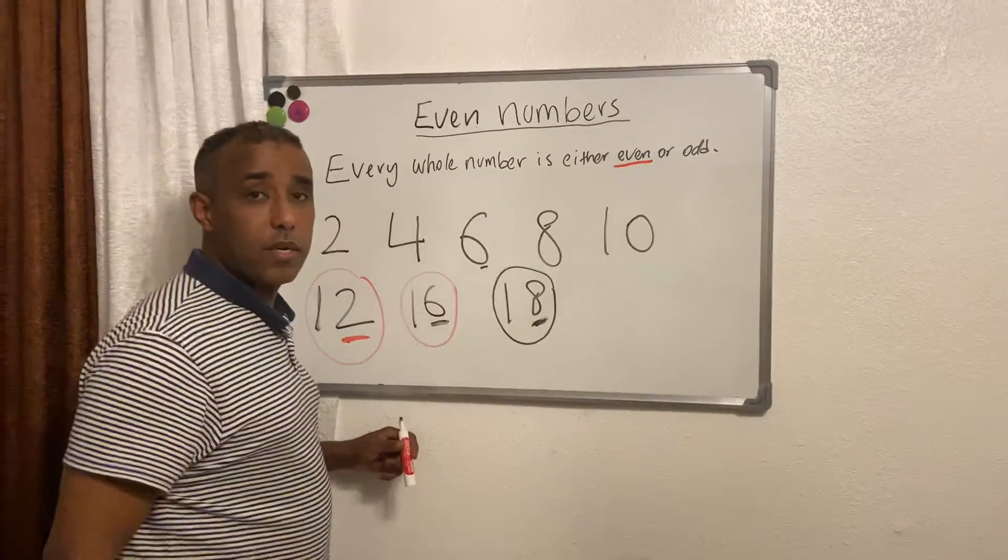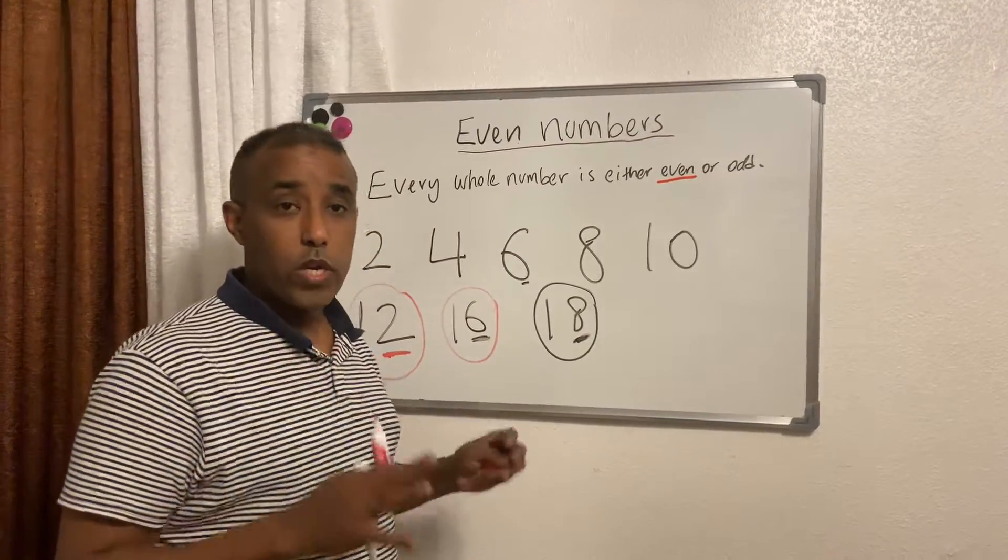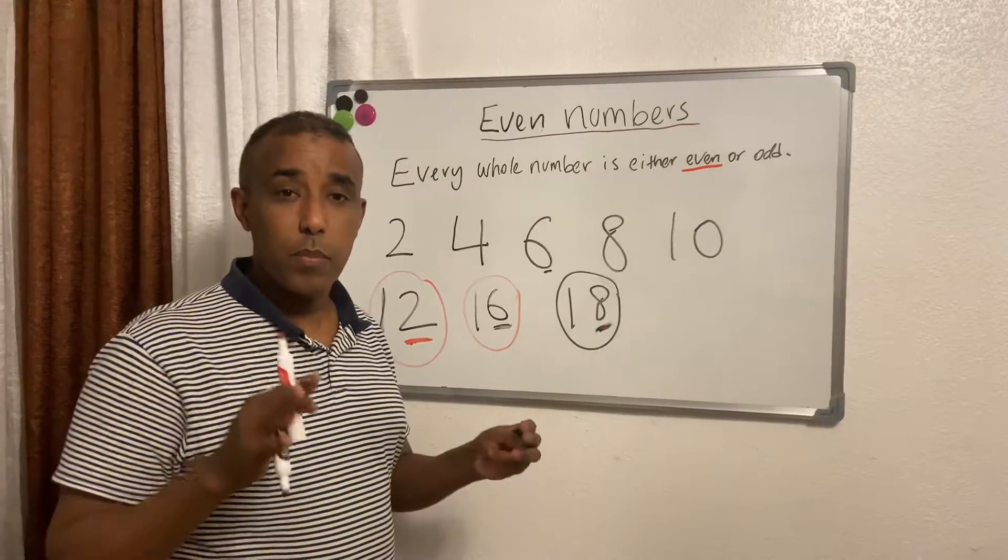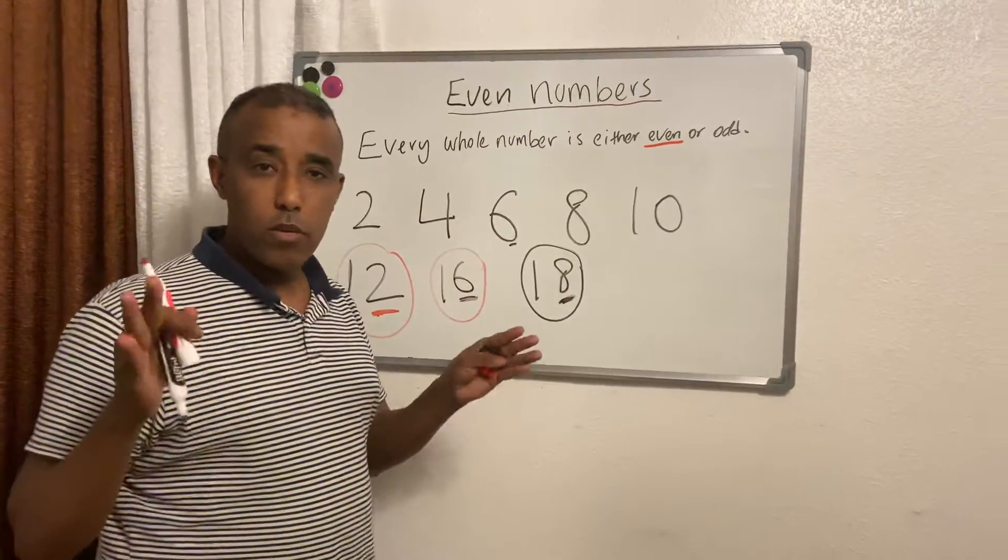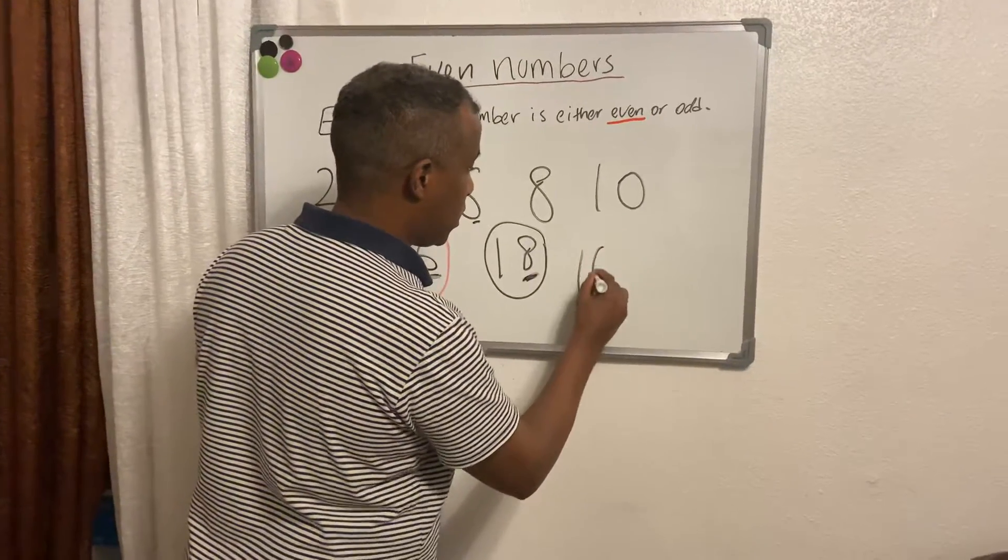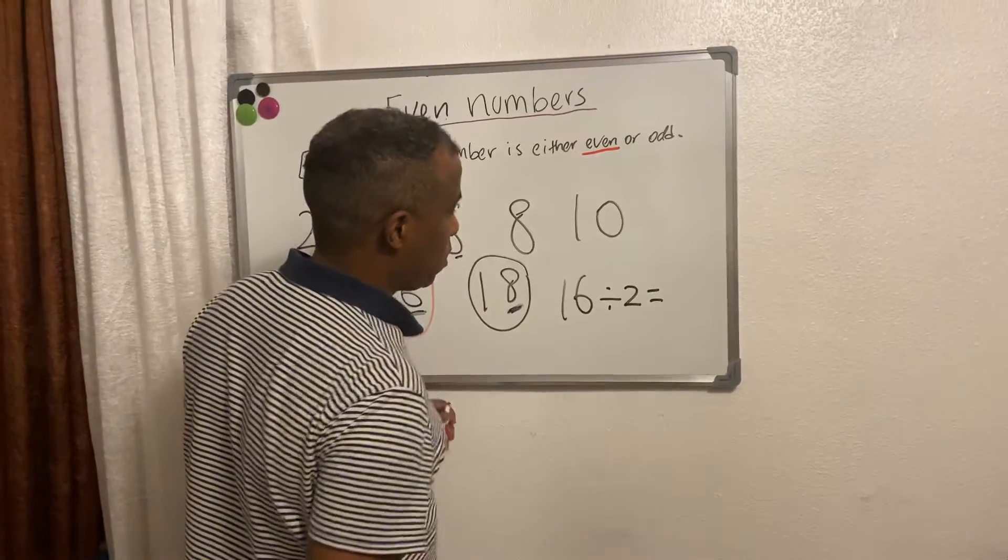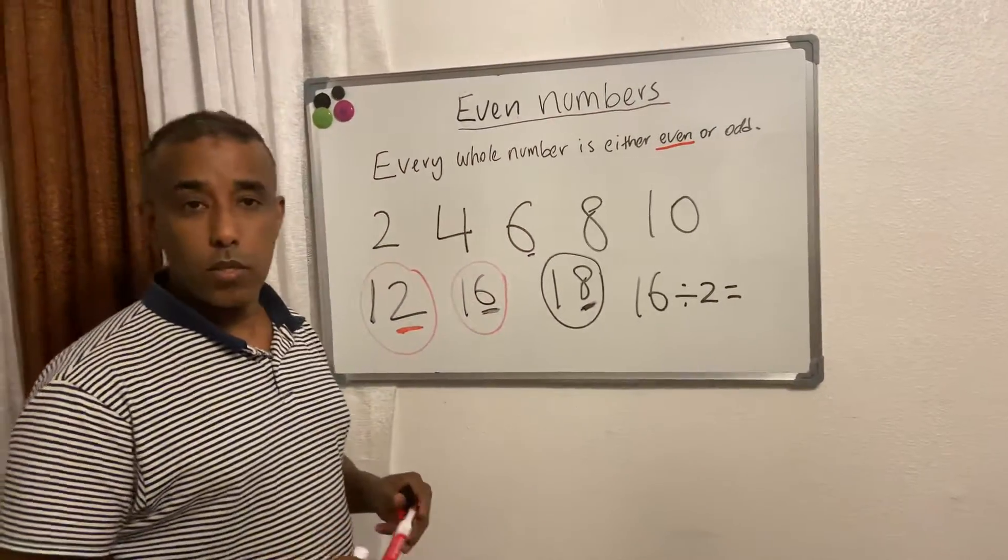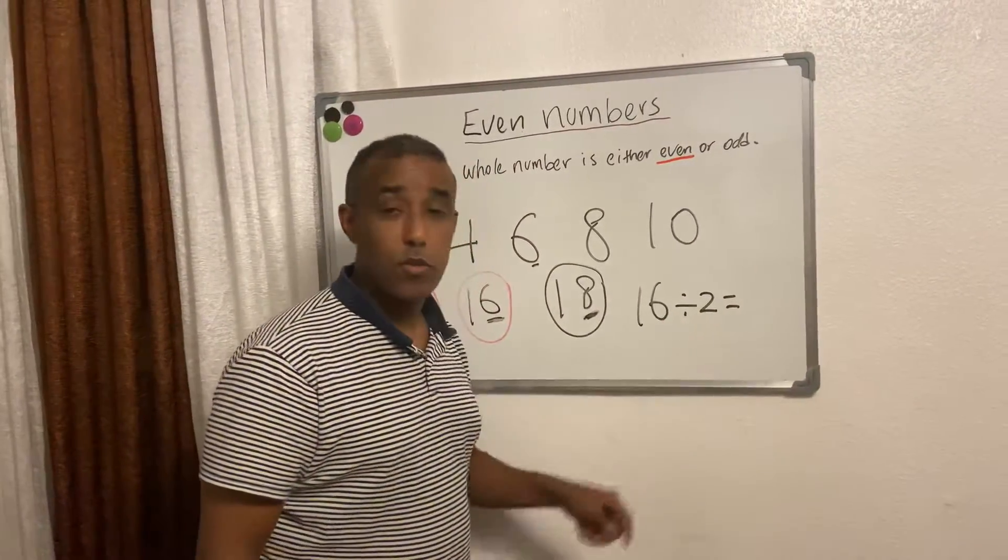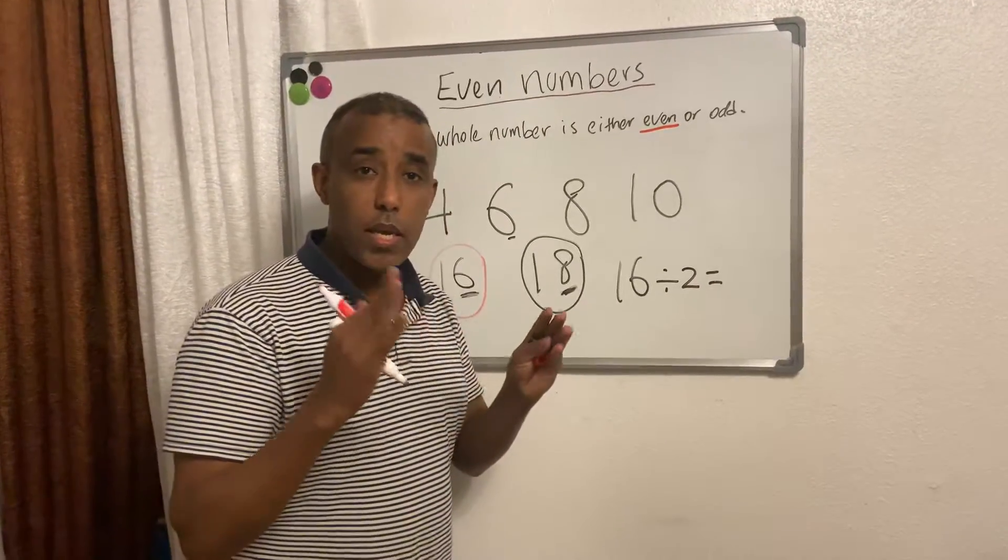Even numbers are equal numbers when you divide into two. Let's find out now. 16 divided by 2. It's your time to answer. 16 divided by 2, once we divide it the answer has to be an even number and we should not have any remainder.